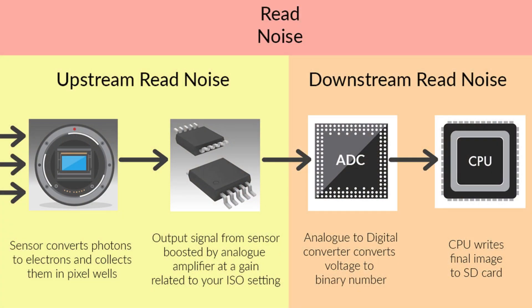Read noise is the electronic noise generated by the sensor itself in the circuitry, and occurs when converting the captured light into a digital signal. Read noise becomes more prominent when using higher ISO or gain settings, whilst at lower ISO settings read noise has less effect, resulting in a cleaner, less noisy image.